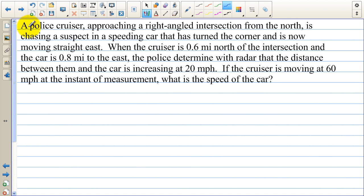In our next example we have a police cruiser approaching a right angle intersection from the north, chasing a suspect in a speeding car that has turned the corner and is now moving straight east. So the police officer is heading towards the corner but the suspect has turned the corner and headed east. Note that the police car is going in this direction, so this side is getting shorter and this one's getting longer. So the rate at which this side is changing coming from the north is going to be negative.